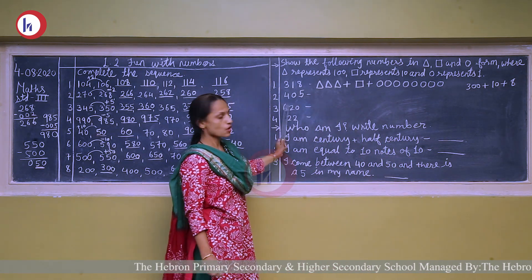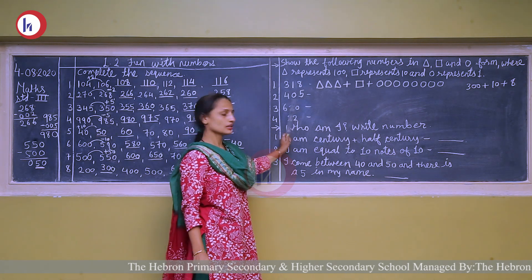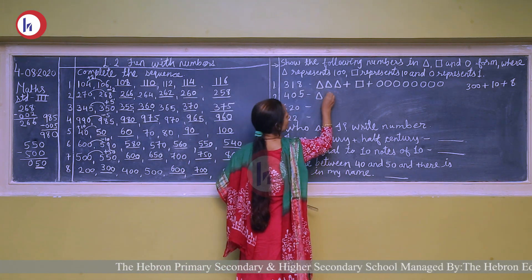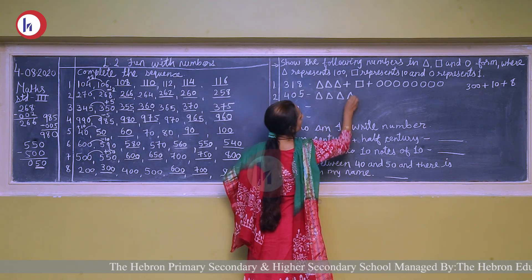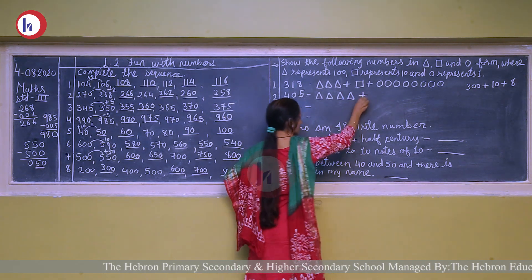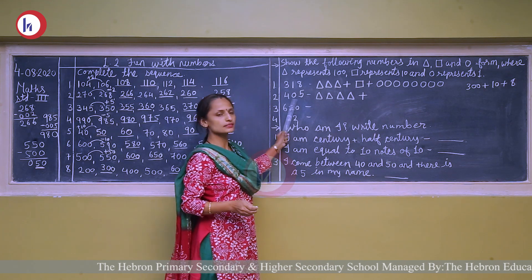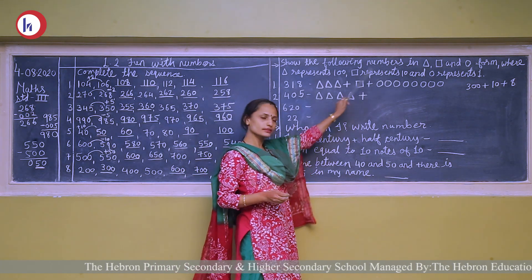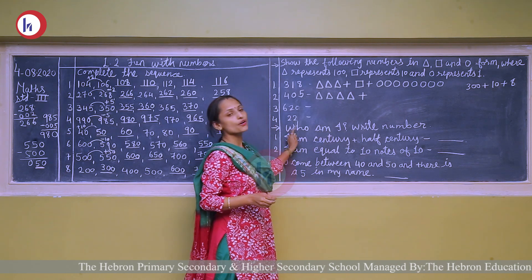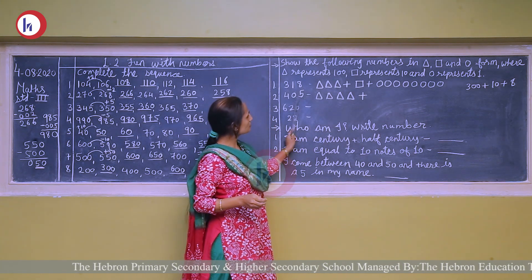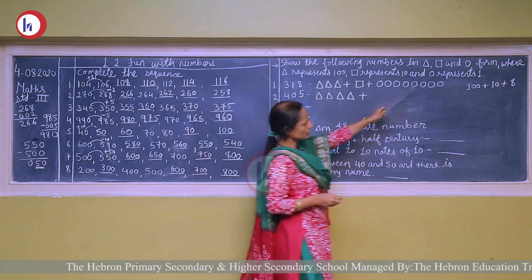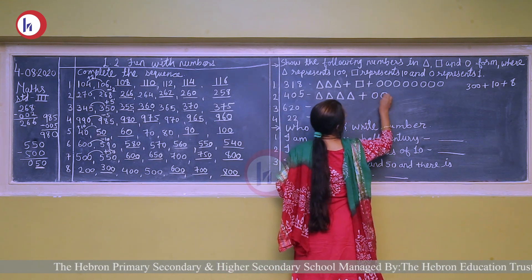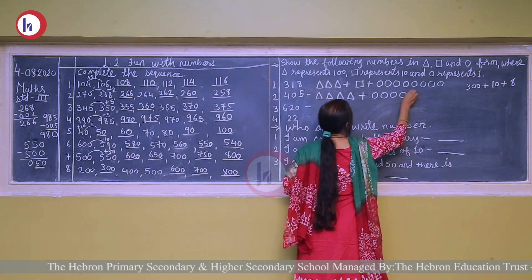Now next: four hundred and five. Four hundred means we will draw four triangles: one, two, three, and four. Plus: on the tens place, zero is there — zero means we will not draw a square. On the ones place: five circles: one, two, three, four, five.